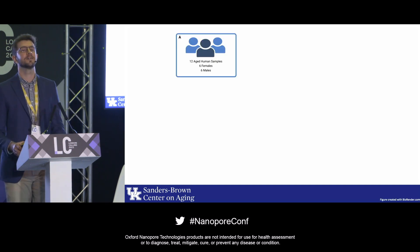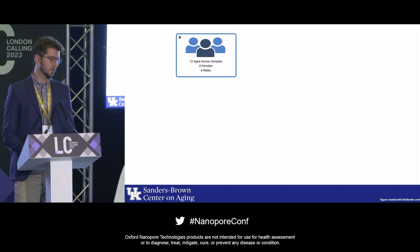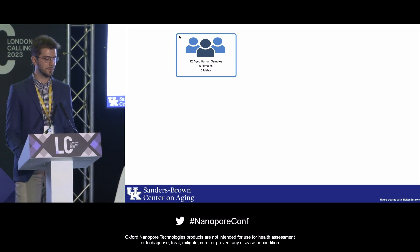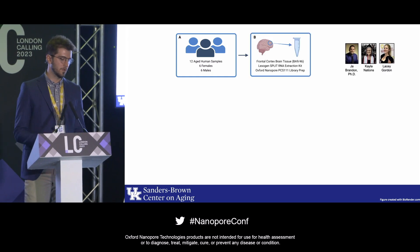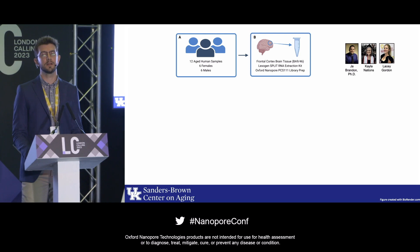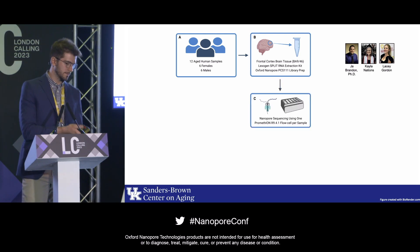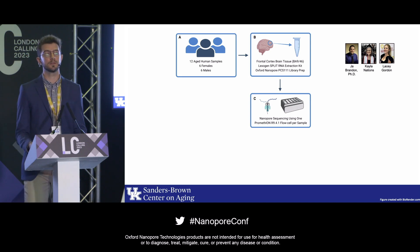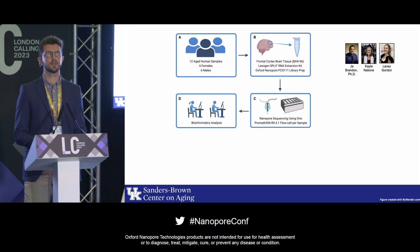Moving forward, this is the experimental setup for the rest of the data. We used 12 aged human samples — six males and six females — extracted frontal cortex brain tissue, and performed PCS111 library prep, which is the PCR-amplified library prep. We used one PromethION flow cell per sample, so we got pretty deep sequencing, followed by downstream bioinformatics analysis.